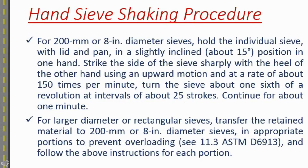For hand sieving using the single sieve set method, a number 200 or 8-inch diameter sieve is held individually with lid and pan, inclined about 15 degrees for the shaking period. If the sieve has a diameter larger than 200, the instructions in ASTM section 11.3 are followed.